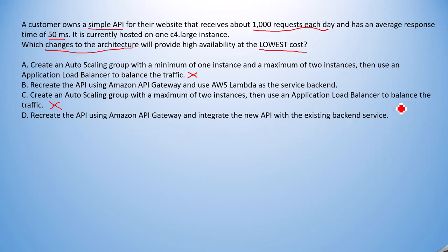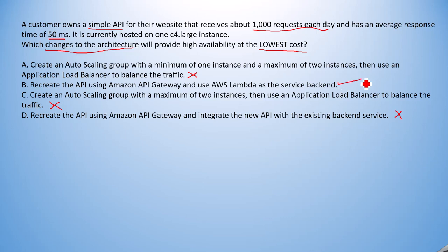Option D: Recreate the API using API Gateway and integrate the new API with the existing backend services. This is the wrong answer because they are already looking to implement a new architecture at the lowest cost with a 50-millisecond response. Keeping the existing backend services defeats that purpose, so this is a wrong answer. The correct answer is Option B with AWS Lambda.